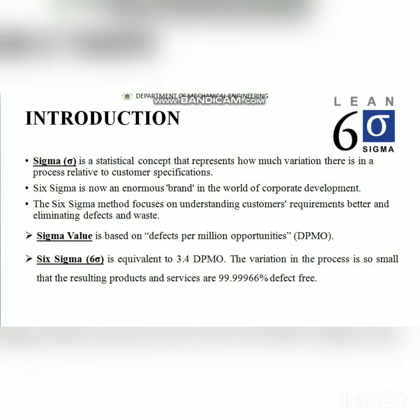DPMO is defects per million opportunities. That is, 1 million opportunities. We will see the defects per million opportunities. When we achieve the components, out of 1 million opportunities, we receive 3.4 defects. And that is the ratio level — that is the situation. If we experience the product's results, the result is 99.99% defect free. So we achieve the Six Sigma value.